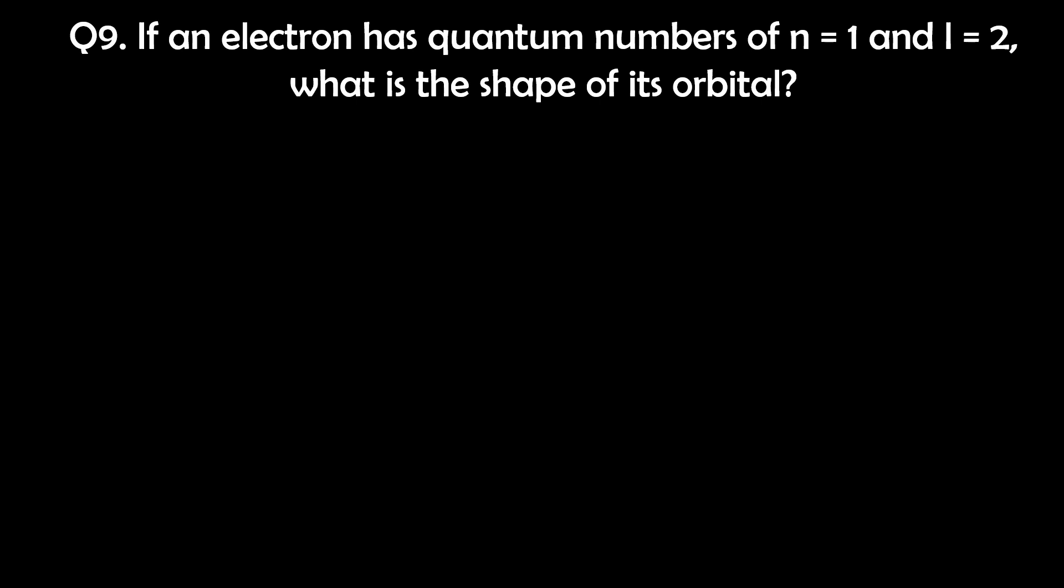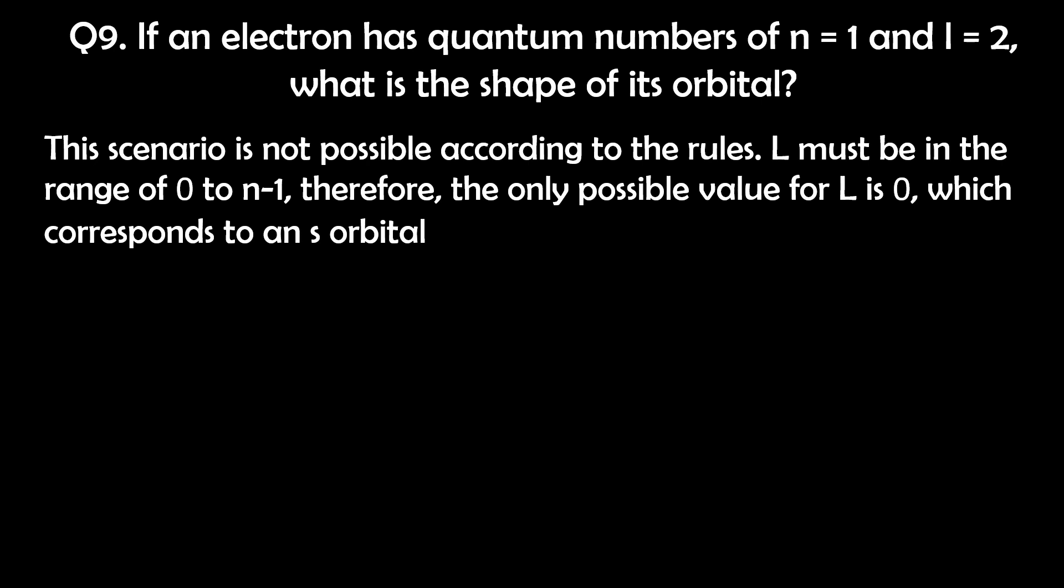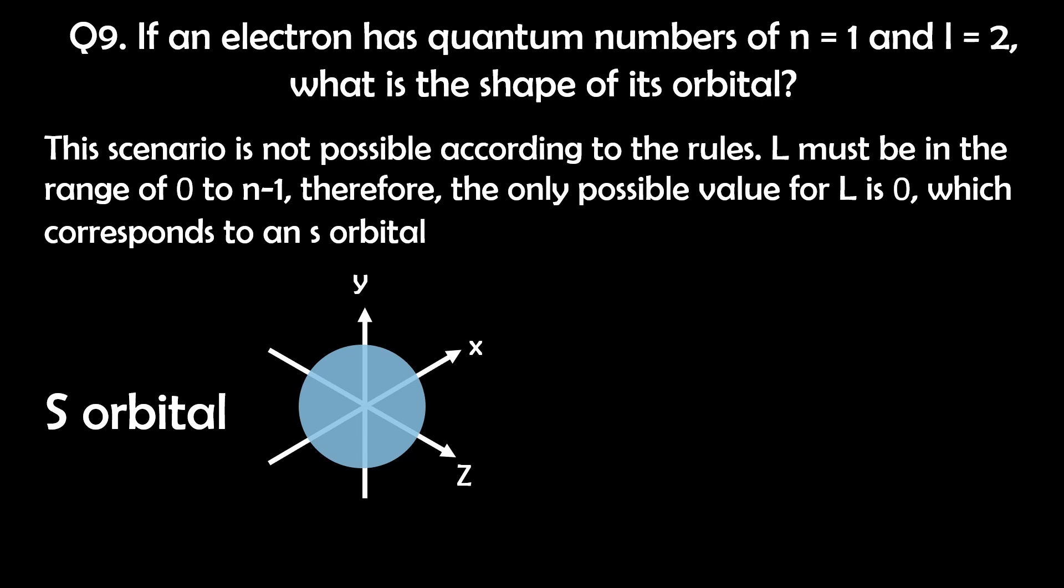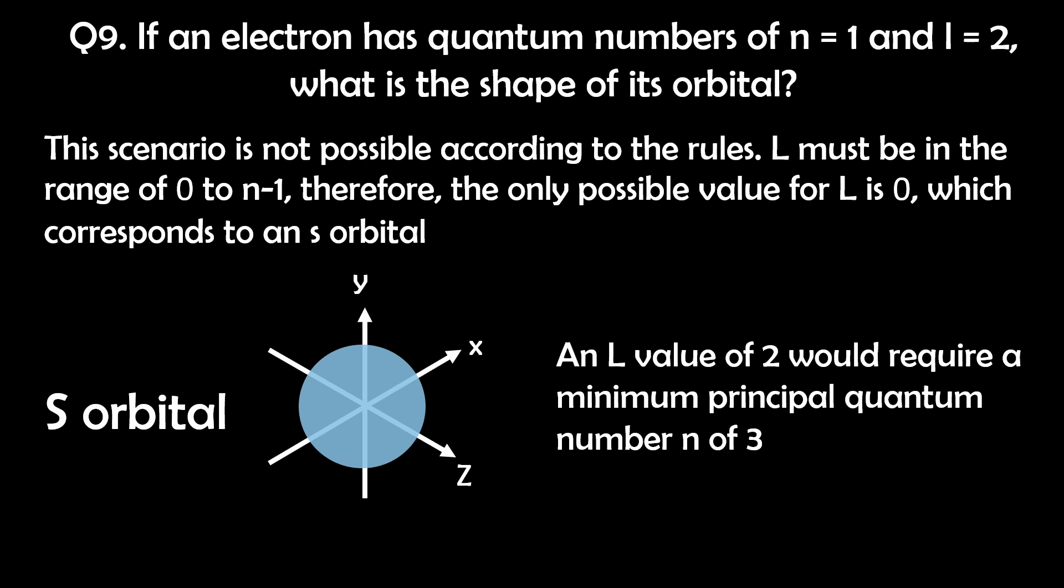Question 9. If an electron has quantum numbers of N equals 1 and L equals 2, what is the shape of its orbital? Actually, this scenario is not possible according to the rules. The angular momentum quantum number L, which determines the shape of the orbital, must be in the range of 0 to N minus 1. For N equals 1, the only possible value for L is 0, which corresponds to an S orbital, a spherical shape. An L value of 2 would require a minimum principal quantum number of 3, as it would indicate a d orbital.